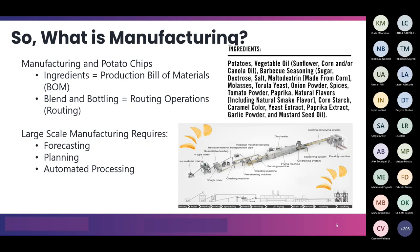For the potato chip example, my ingredients include potatoes, vegetable oil, and maybe some barbecue seasoning to kick it up a notch. These are my component items in the bill of material. The routing is the ability to take those components and turn them into the finished good — in this case a potato chip — by washing, slicing, and cutting the potatoes to a certain size, then frying them.